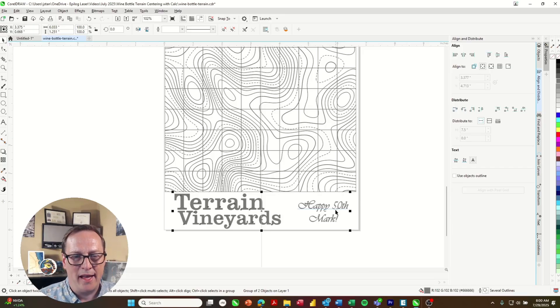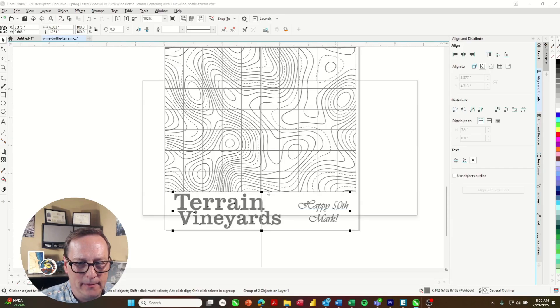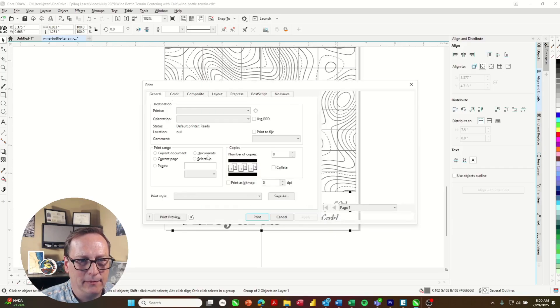Go ahead and print that selection only. So I've chosen the Epilogue engraver. Selection only. So we've got just that part of the graphic. And click print.